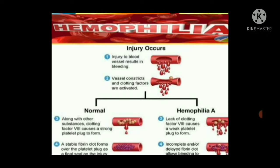In the comparison diagram, normal clotting involves: step 1 — injury to the blood vessel results in bleeding; step 2 — vessel constricts and clotting factors are activated; clotting factors 8, 9 and others cause a strong platelet plug to form; then a stable fibrin clot forms over the platelet plug. In hemophilia, due to deficiency of clotting factor 8, the platelet plug is weak and incomplete, fibrin clot formation is delayed, and bleeding does not stop as it would in normal clotting.